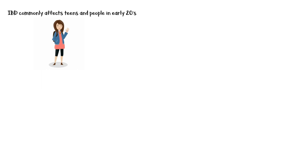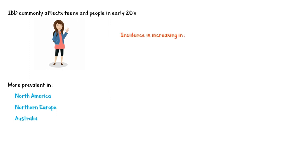The geographic distribution of IBD is highly variable, but it is more common in developed nations such as North America, Northern Europe, and Australia. However, the incidence of IBD is increasing in regions like Africa, South America, and Asia, where its prevalence was historically low.